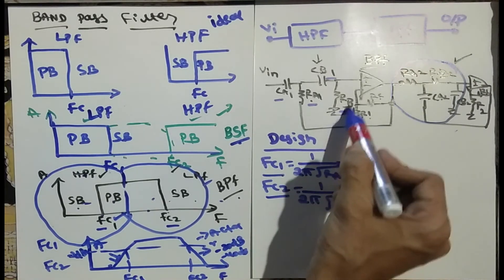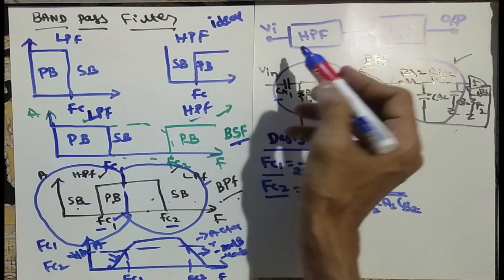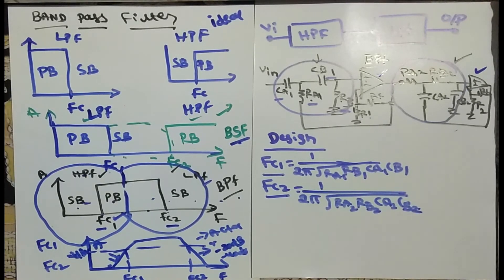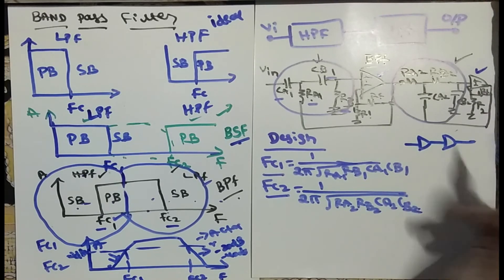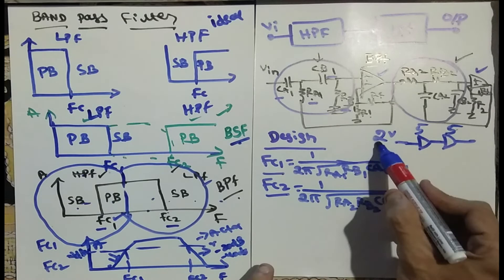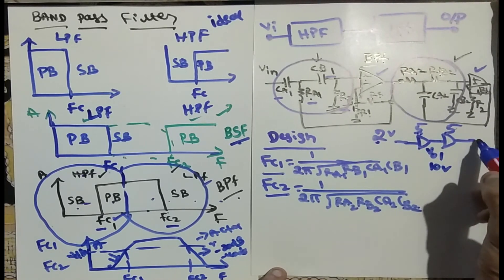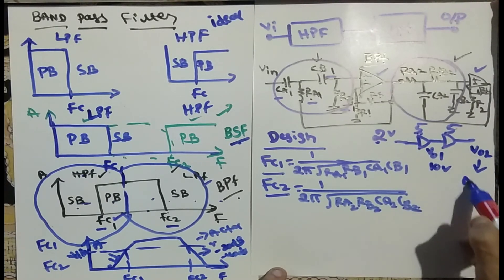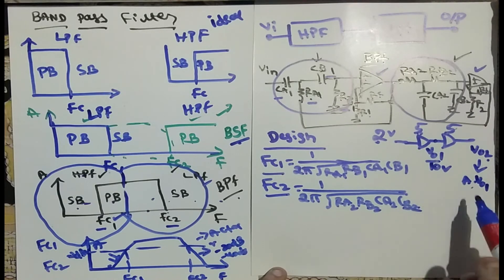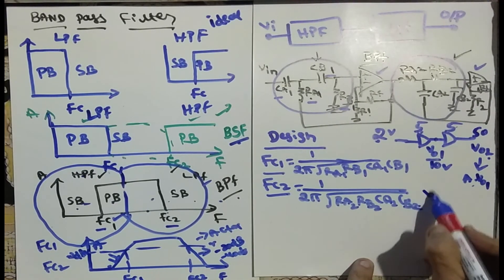For the design, you need to find two cutoff frequencies. fc1 comes from the high pass filter portion: fc1 = 1 divided by 2π times root of Ra1·Rb1·Ca1·Cb1. fc2 comes from the low pass filter portion: fc2 = 1 divided by 2π times root of Ra2·Rb2·Ca2·Cb2. For the gain, since two amplifiers are connected in series, the total gain is the multiplication of the individual gains.